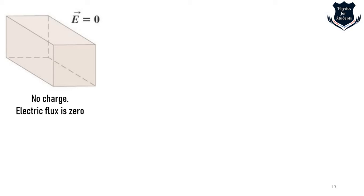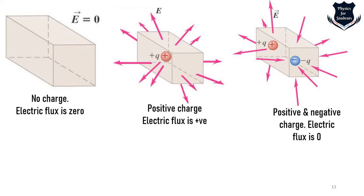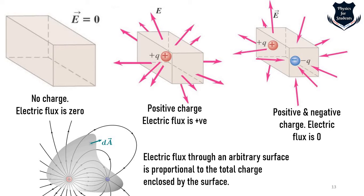Using the concept of a box: with no charge inside, there are no field lines crossing the surface. With a positive charge inside, field lines radiate outward — positive flux. With a negative charge, lines point inward — negative flux. For an arbitrary surface, the electric flux is proportional to the total enclosed charge.